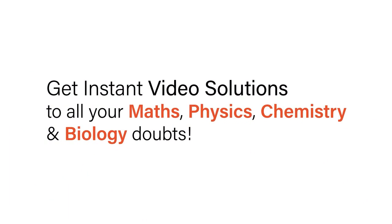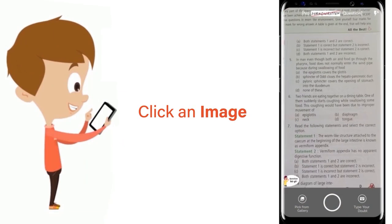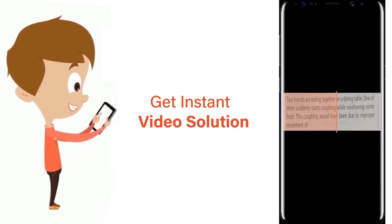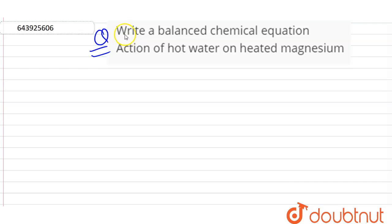With Doubtnet, get instant video solutions to all your maths, physics, chemistry and biology doubts. Just click the image of the question, crop the question and get instant video solution. Write a balanced chemical equation: action of hot water on heated magnesium.